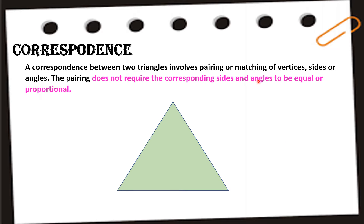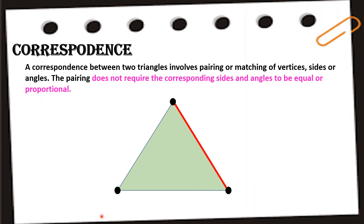Let's discuss the vertices, sides, and angles of a triangle. The three dots at the intersections are called vertices. The line segments connecting two points — shown in red — are the sides. The angles, shown in violet, are formed between two sides.